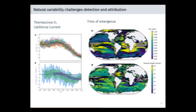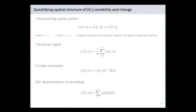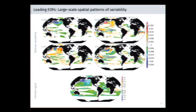We can also think about emergence in the context of spatial patterns associated with different forcing. Here's our decomposition of a total time-evolving spatial pattern into a component associated with natural variability and one associated with the forced trend. We do an EOF decomposition of climate anomalies into a time-varying principal component and associated spatial pattern. Comparing this analysis on a control integration to the ensemble mean, we can visualize characteristic patterns associated with natural variability versus those associated with the forced trend.